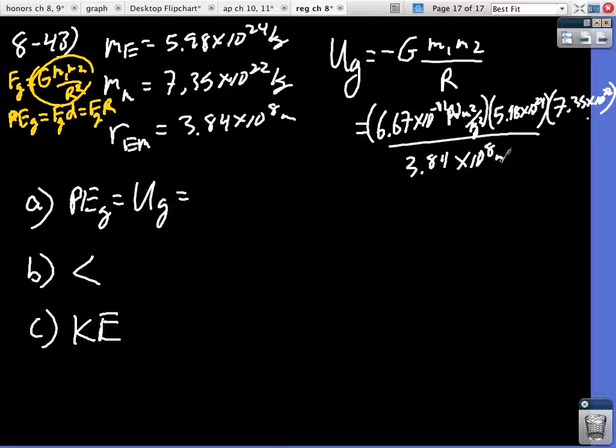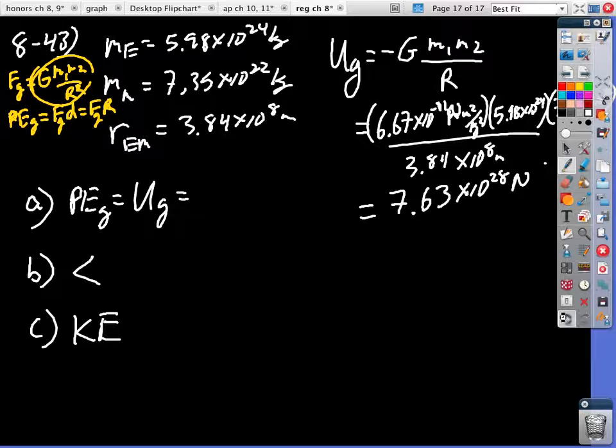So 6.67 times 10 to the minus 11 times 5.98 times 10 to the 24th times 7.35 times 10 to the 22nd, and then dividing all of that by 3.84 times 10 to the 8th. And then we get 7.63 times 10 to the 28th joules. That potential energy.